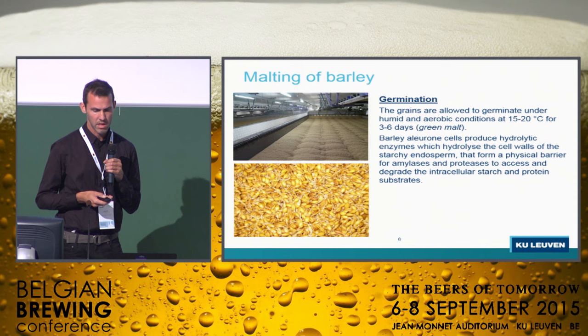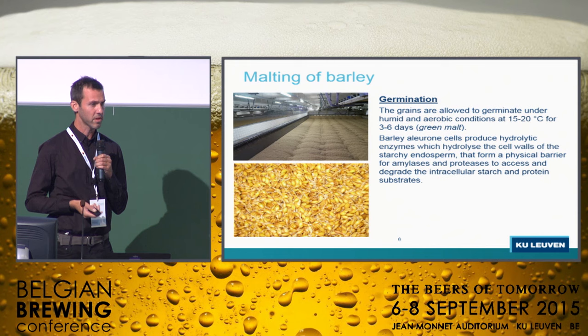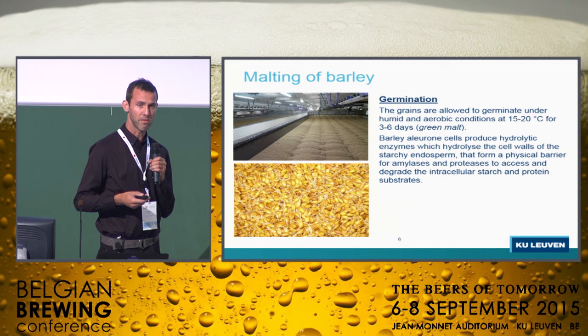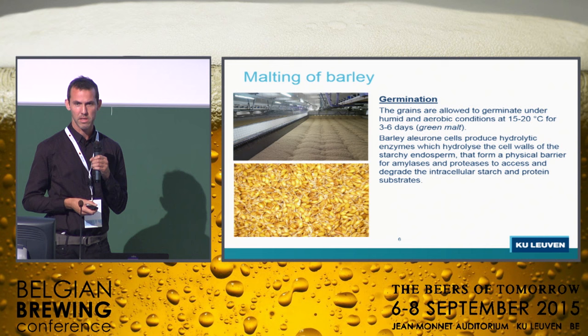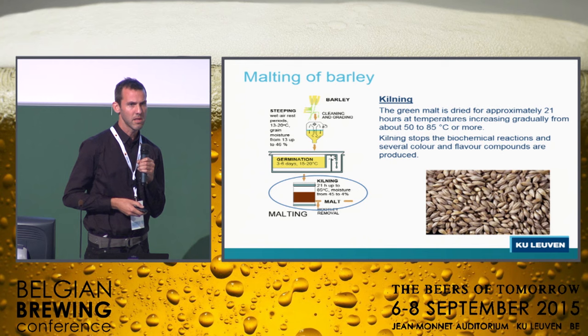The second step is germination. In this step, the grains are allowed to germinate under humid aerobic conditions, about 15-20 degrees Celsius for a few days — three to five, six days — to obtain the green malt. What is happening in this step is that the enzymes are produced by the aleurone layer, and the cell walls of the endosperm can then be hydrolyzed and become accessible for enzymes.